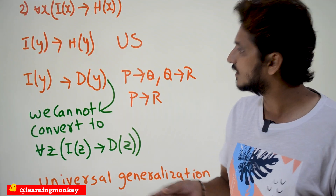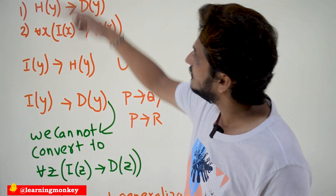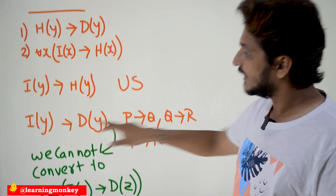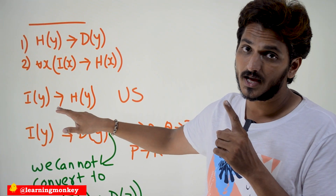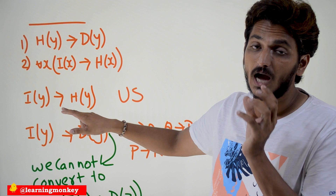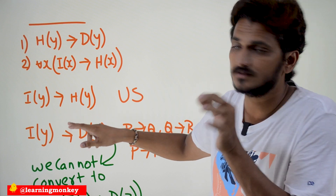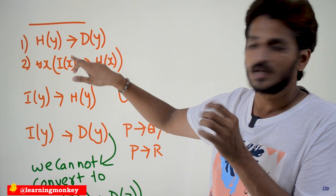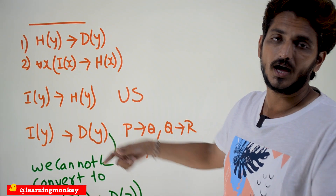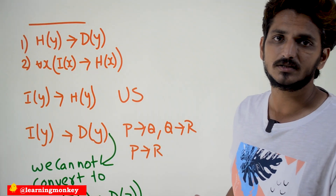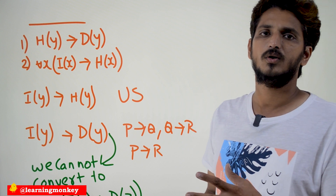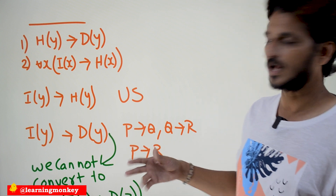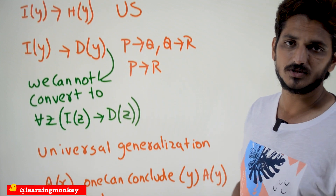No, we cannot say that. Because y is a free variable in the given premise — y is a variable which is provided and is only applicable for one subject. So can we say this for all objects, all subjects? No. This is the situation where we cannot apply universal generalization.